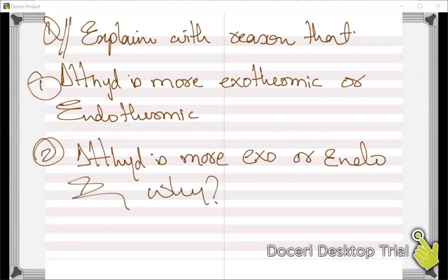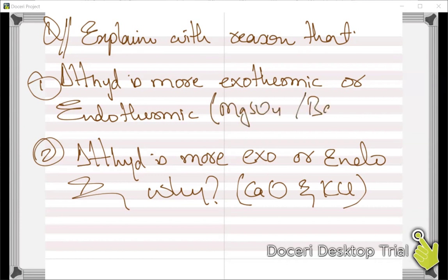Two examples are given: one involves calcium oxide and potassium chloride, the other involves magnesium sulfate and barium sulfate. You need to compare each pair and explain with reasoning which has a more exothermic and which has a more endothermic enthalpy change. This is your homework.